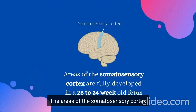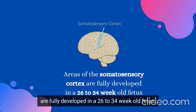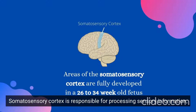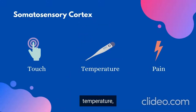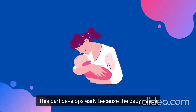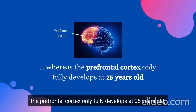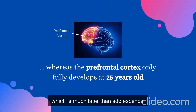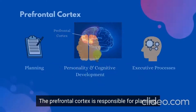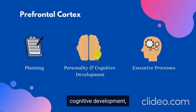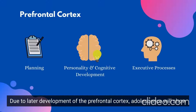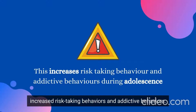The somatosensory cortex is fully developed in a 26- to 34-week-old fetus and is responsible for processing sensory information such as touch, temperature, and pain. This part develops early because the baby needs to receive and process sensory information from their caregivers. On the other hand, the prefrontal cortex only fully develops at 25 years old, which is much later than adolescence. The prefrontal cortex is responsible for planning, personality development, cognitive development, and executive processes. Due to the later development of the prefrontal cortex, adolescents show increased risk-taking and addictive behaviors.